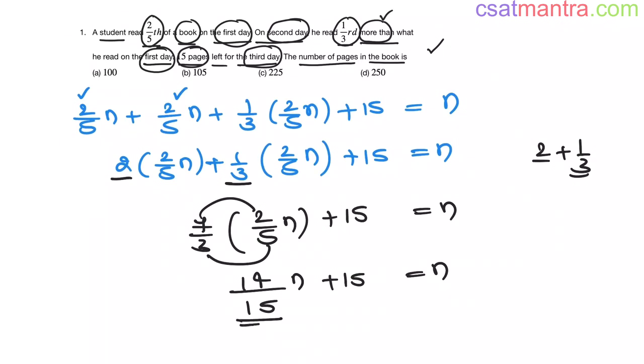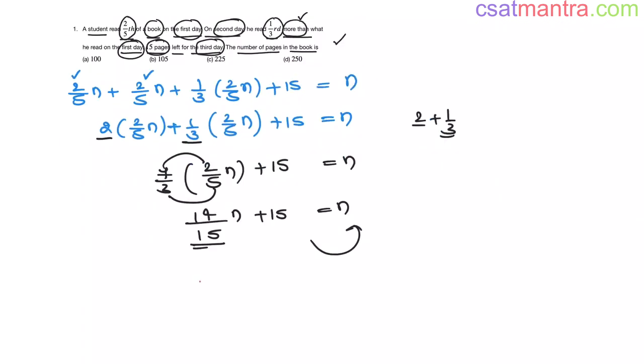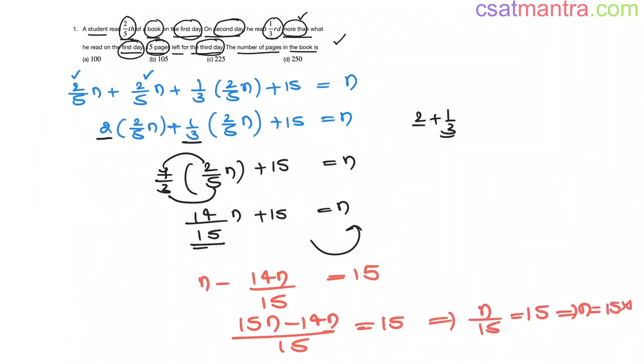Now, bringing this value on this side. n minus 14n/15 this is equal to 15. 15n minus 14n by 15 is equal to 15. So, n/15 is equal to 15. n is equal to 15 into 15. This is equal to 225. So, C is our answer my friends.